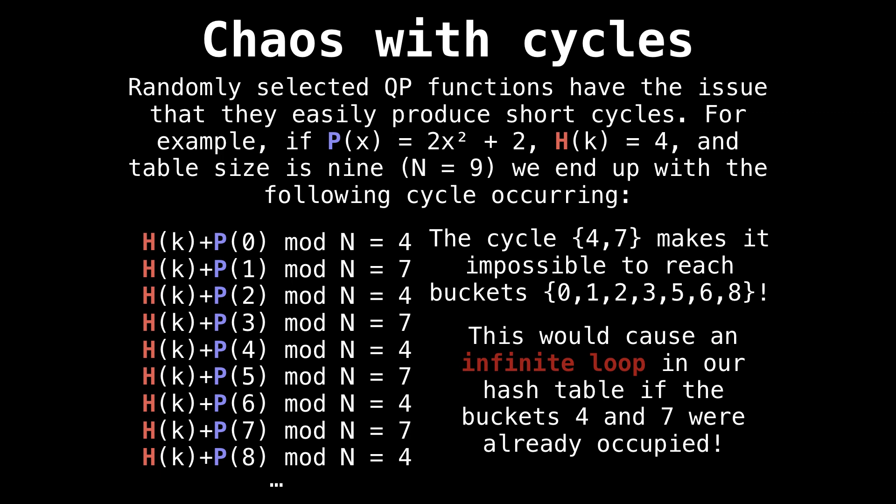Here's an example. Suppose we chose our probing function to be P(x) = 2x² + 2. The key we wanted to insert hashed to 4 and the current table size was 9. Then we would end up with a 2-cycle.